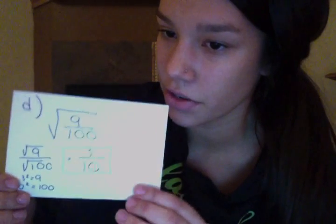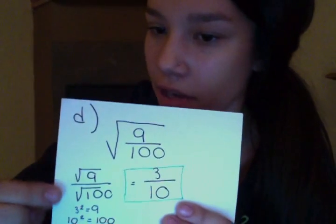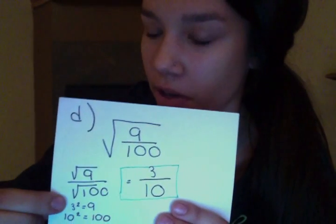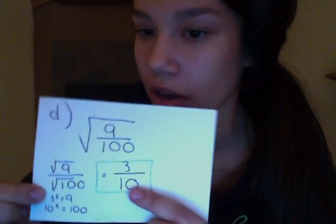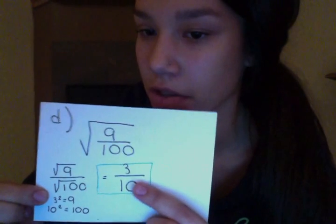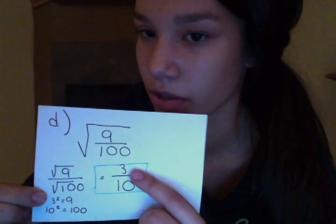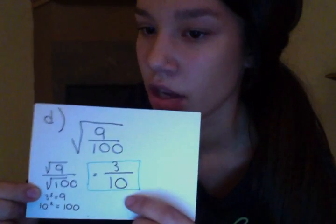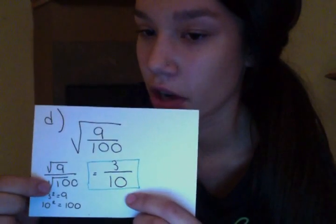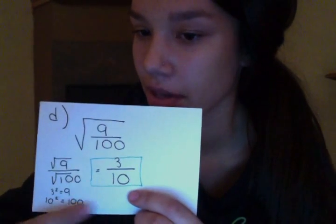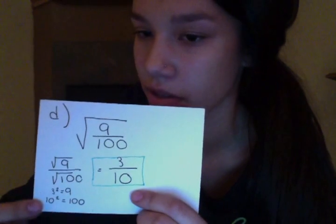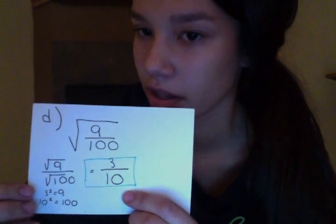For this one you have the square root of 9 over 100. You can break that down into the square root of 9 over the square root of 100. The square root of 9 is 3 because 3 times 3 equals 9, and the square root of 100 is 10 because 10 times 10 equals 100, giving you the answer 3 tenths.